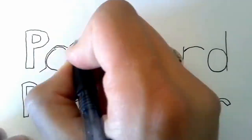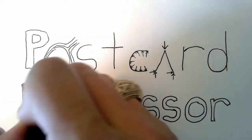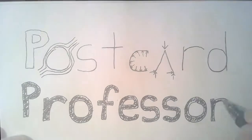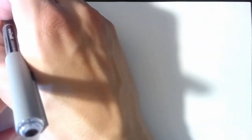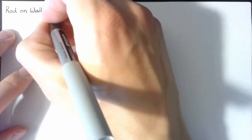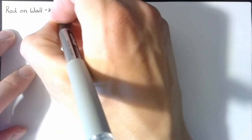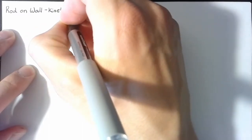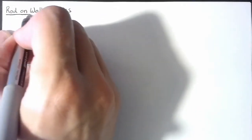Hello and welcome to the Postcard Professor, where we take complex ideas and explain them in the space of a postcard. This is the second of two videos working on a rod-on-a-wall example. In this video we're going to be looking at the kinetics and using a free body diagram along with the kinematics we derived last time in order to solve for the acceleration of the rod leaning on the wall.